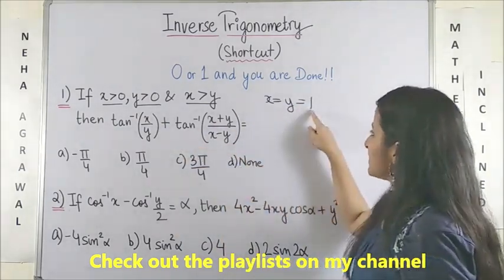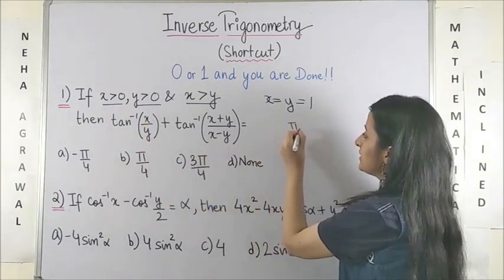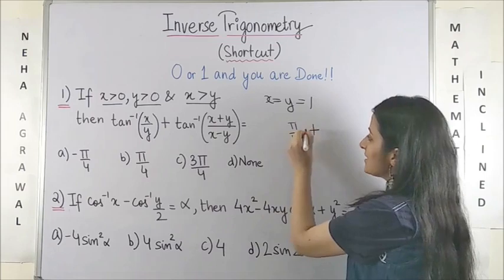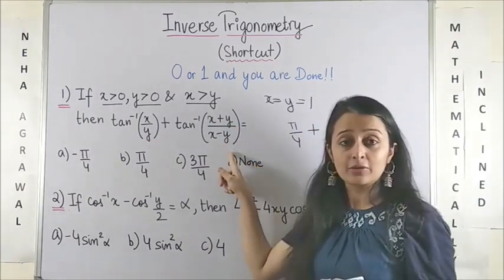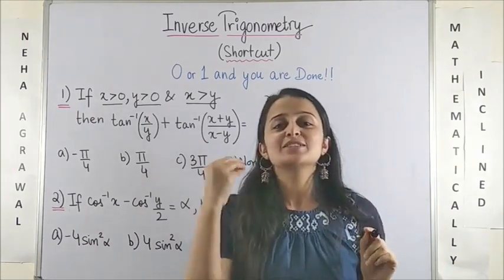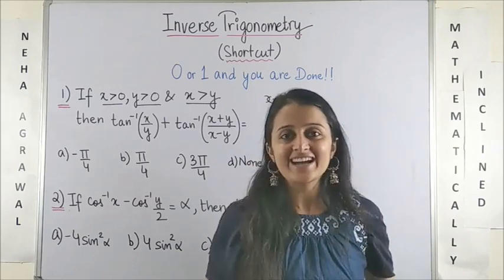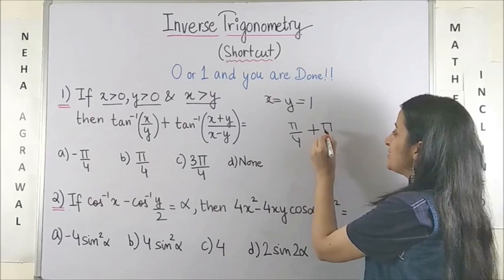So if I substitute x and y as 1, this makes it tan inverse 1 which is very conveniently pi by 4 plus this is 1 plus 1 which is 2 upon 0, tan inverse of 2 by 0. But don't worry, we know tan inverse is not defined when the angle inside is 90 degrees. So this makes it pi by 2.